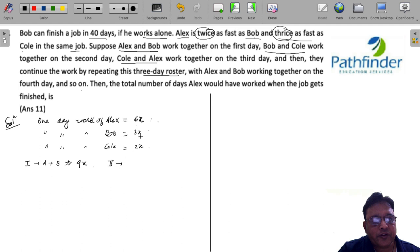On second day, B and C work together, so they will complete 5x. And on the third day, A and C work together, so they will complete 8x on the third day.